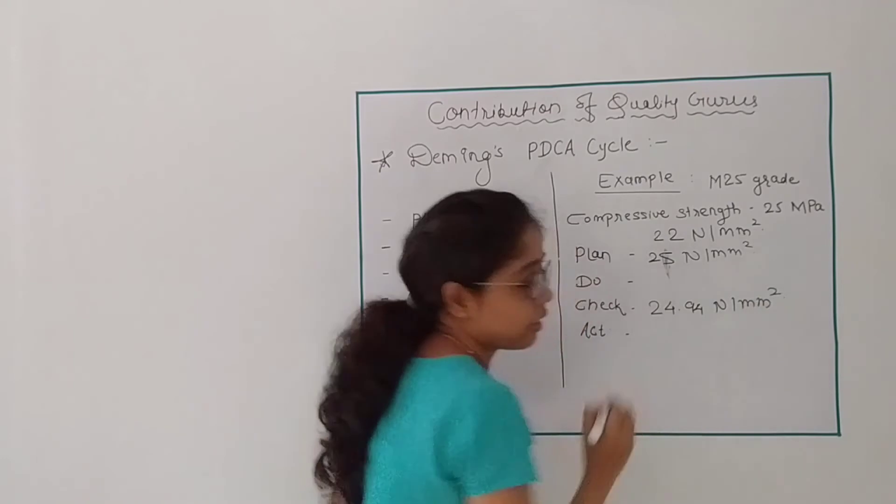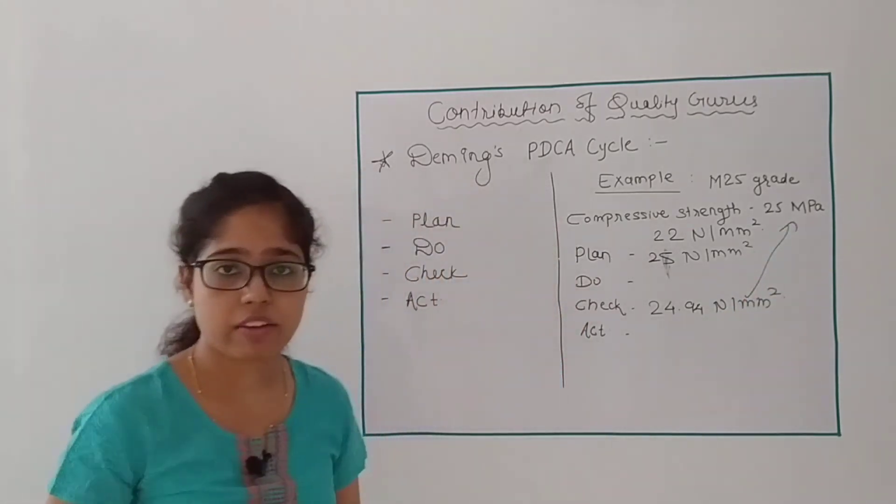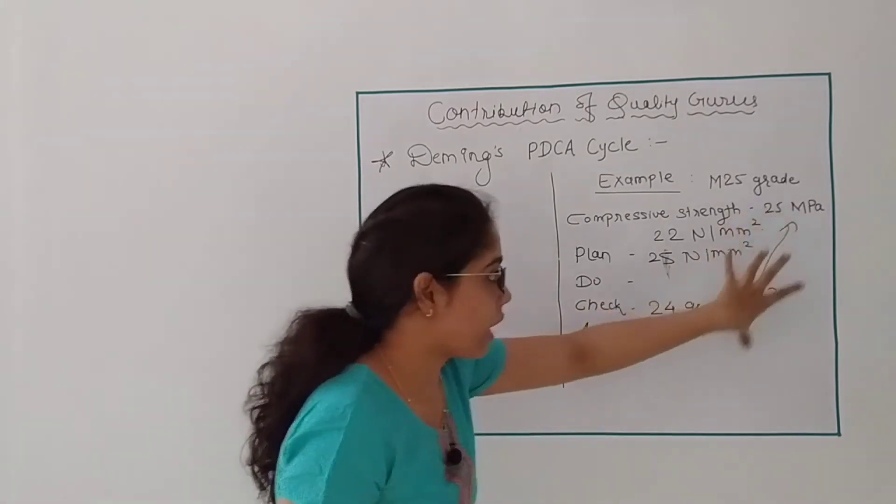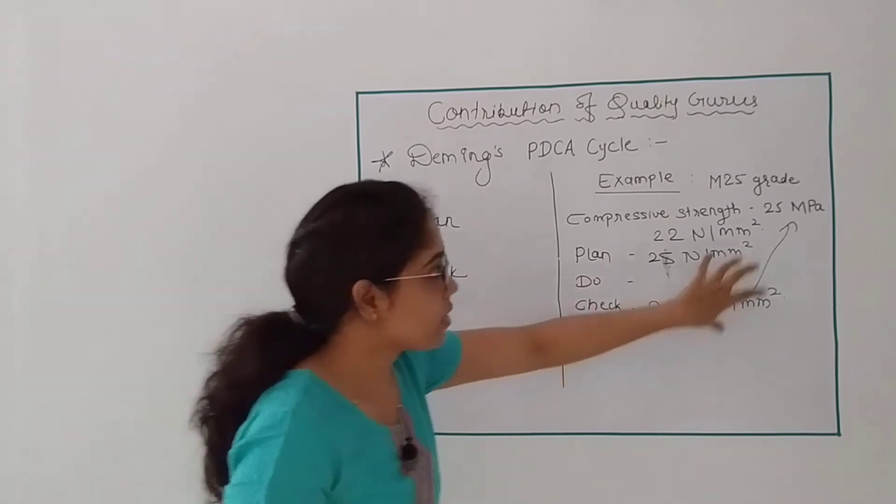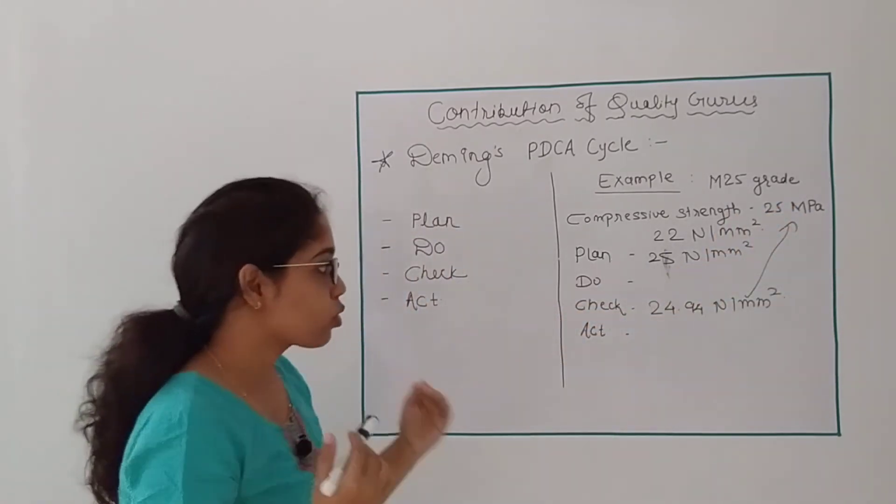Which is approximately 25 N per mm square. So what happened? I have checked these values and the standard values, and my values and standard values are now matching.